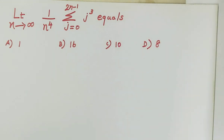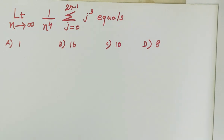Welcome to Komal Online Mags. Question: limit n tends to infinity, 1 by n power 4, summation j runs from 0 to 2n minus 1, j power 3 equals — options: 1, 16, 10, 8.